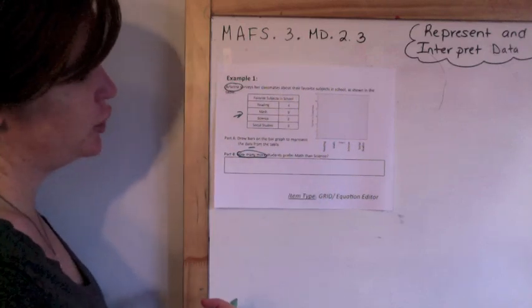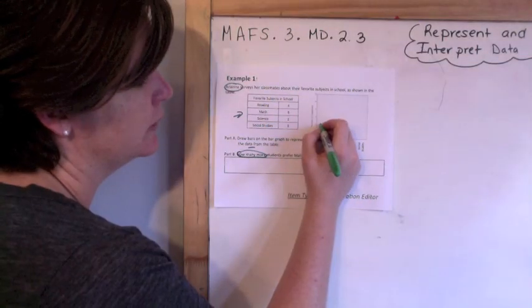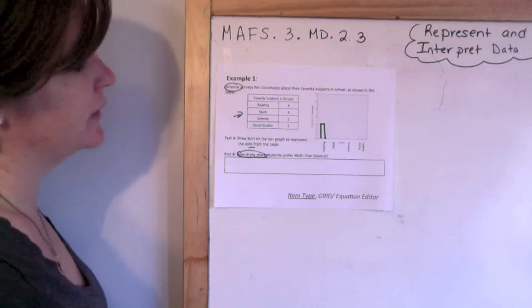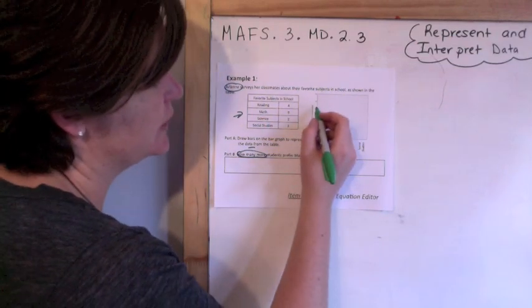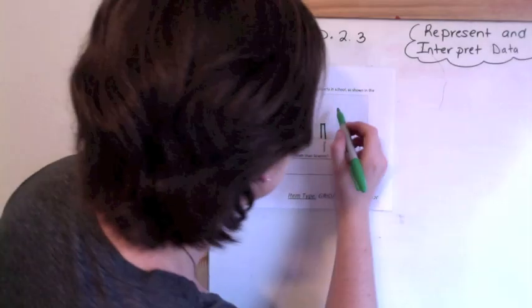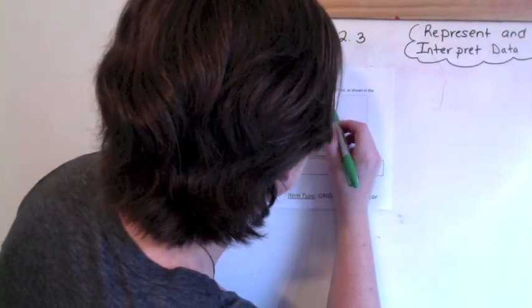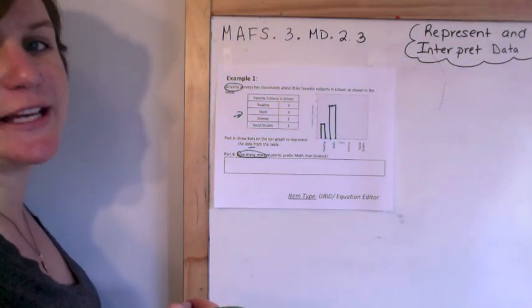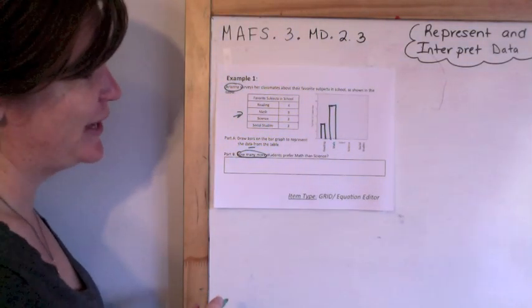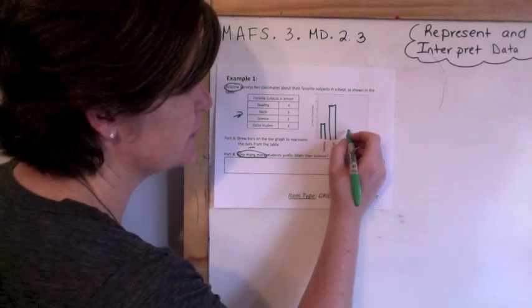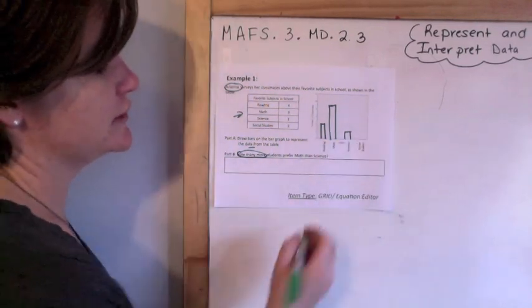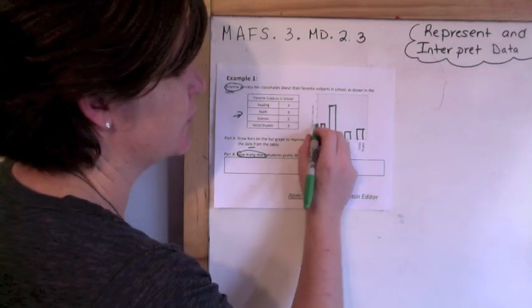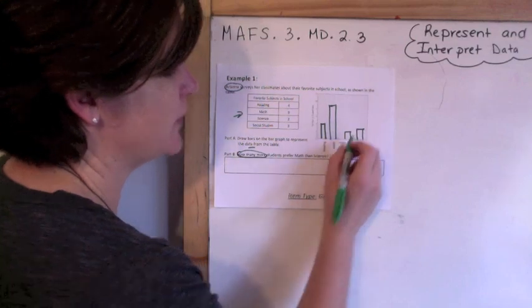I'm counting by twos but I do have each individual tick there for me. So reading is four, so here's four. Math is nine, so here is eight and there's ten, so nine would be in the middle. Science would be two, so here's my two. And then social studies is three, which is a notch above the two but not quite to the four, so it's right there in the middle.